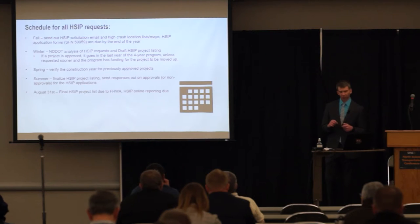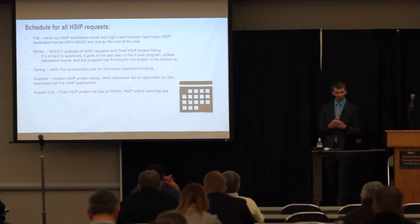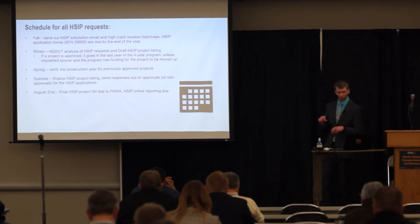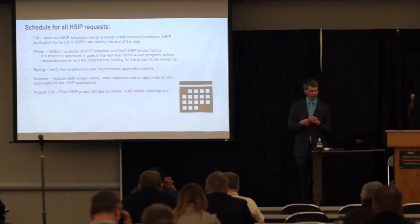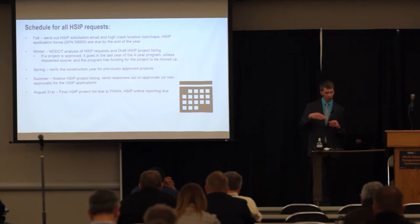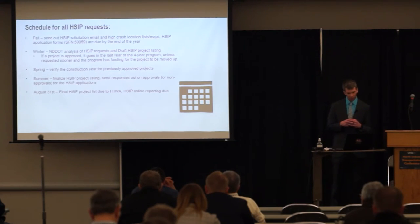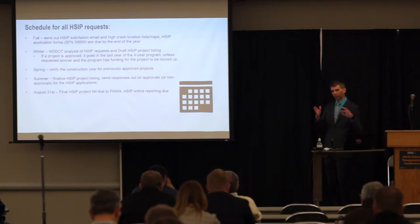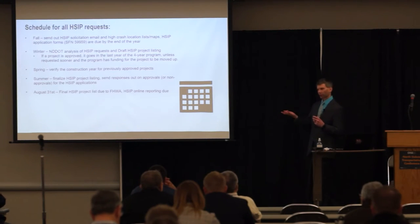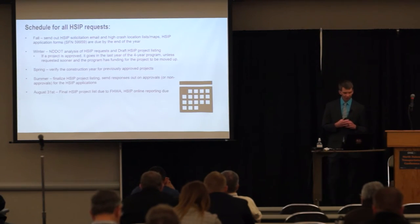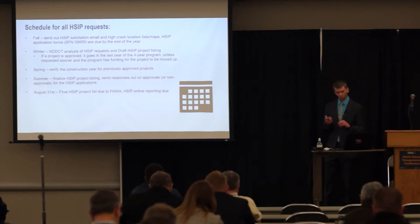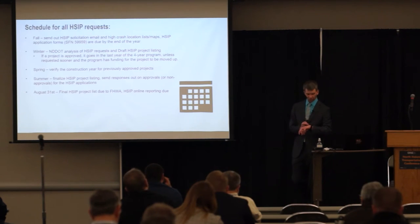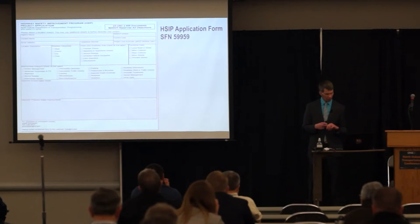In the spring, we verify the construction year for previously approved projects. In the summer, I finalize the HSIP project listing and send responses out on approvals or non-approvals. There is a time gap from January 1st of 2022 to when you'll get notified whether your project has been approved for HSIP funding. On August 31st of every year, we finalize the HSIP project listing and submit it to Federal Highway. There is also a federal requirement of online reporting that we do every year for the HSIP program.